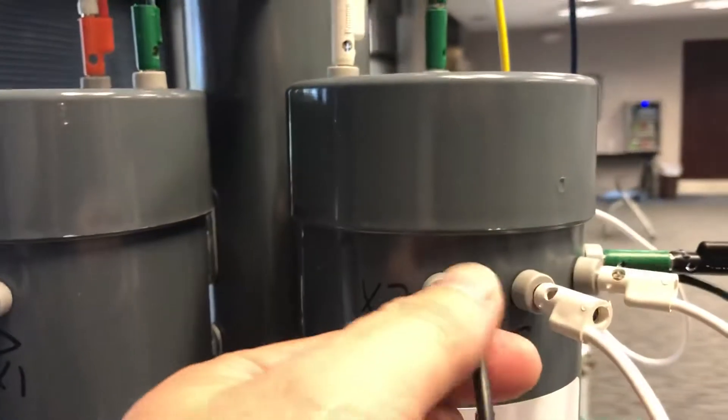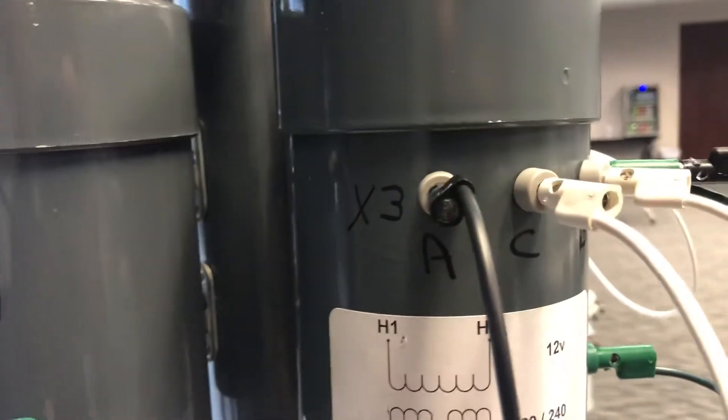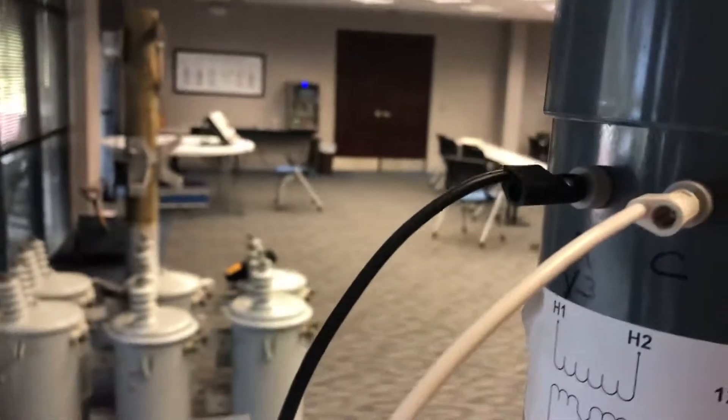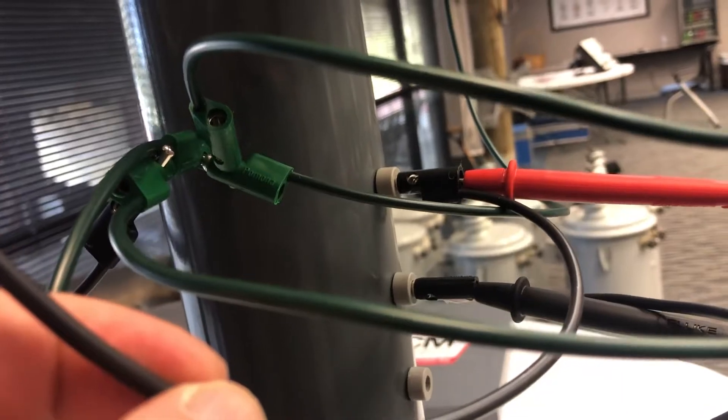And then we take and pull a hot leg off of this X3, X1 on this pot's grounded, X3 hot leg down to here. And then on this transformer that we have the X3 grounded, we're going to pull a hot leg off down to here, and park there on our secondary bar.